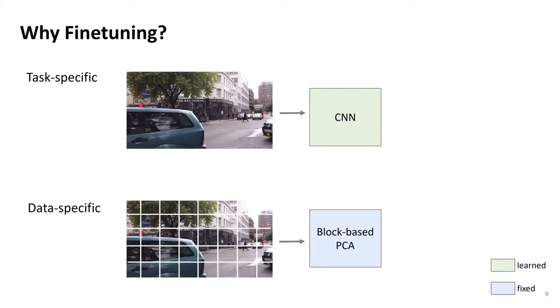The drawback of PCA is, however, that it is computed without a task of frame interpolation in mind. As a result, it is data-specific and not task-specific, unlike a learned convolutional neural network.